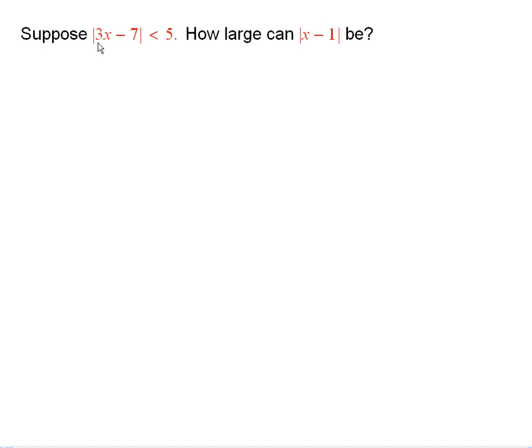Suppose I have the absolute value of 3x minus 7 is less than 5. Then I'd like to know how close x can be to 1.